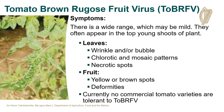Tomato Brown Rugose Fruit Virus has a wide range of symptoms which may be mild. They often appear in the top young shoots of plants. On the leaves, wrinkles or bubbles may appear. Chlorotic and mosaic patterns can develop and some leaves may have necrotic spots. On the fruits, this virus can cause yellow or brown spots or deformities. There are currently no commercial tomato varieties tolerant to this virus.